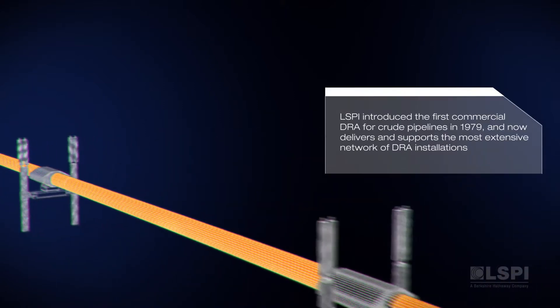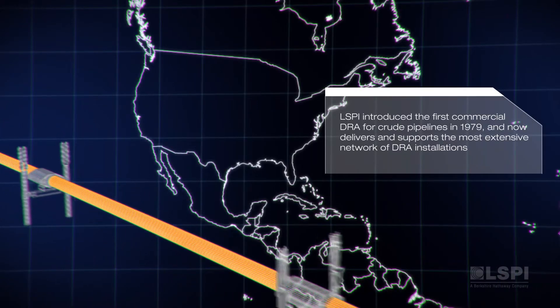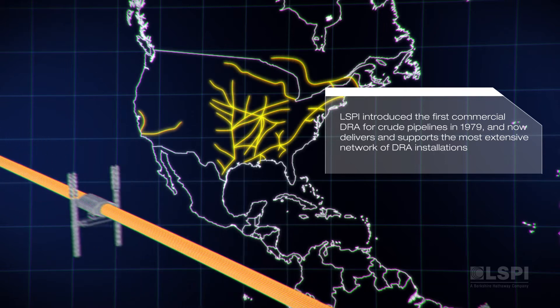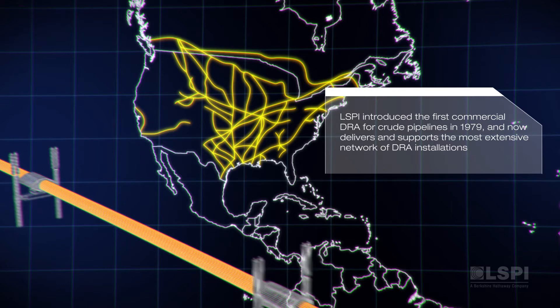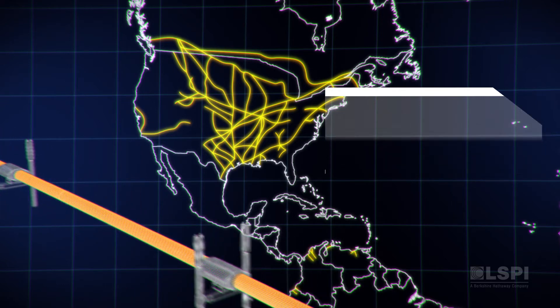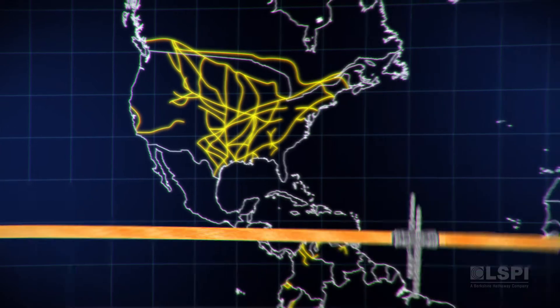LSPI introduced the first commercial DRA for crude pipelines in 1979 and now delivers and supports the most extensive network of DRA installations in the world for both crude and refined product pipelines.